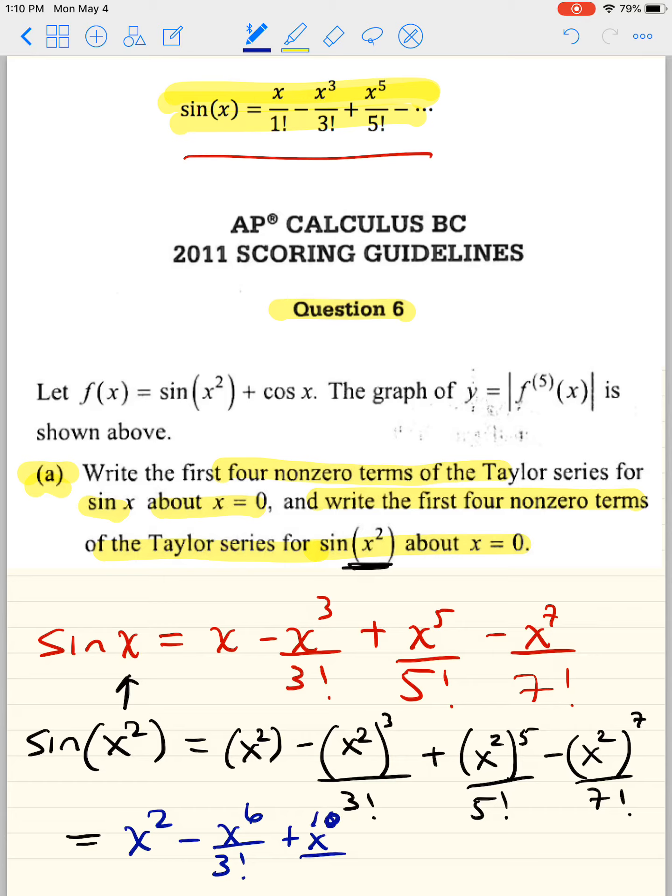I believe that's 120. And then minus x to the 14th over 7 factorial.